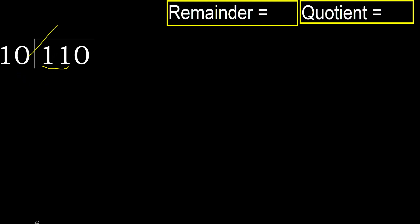10 multiplied by which number is nearest to 11 but not greater? 10 multiplied by 2 is 20, which is greater. Multiplied by 1 is 10, it is not greater. Subtract: 11 minus 10 is 1.